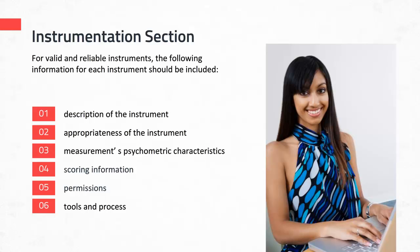This concludes this tutorial. You should now understand the different types of reliability and validity, as well as their definitions. And you should understand what goes into a narrative for valid and reliable instruments in your instrumentation section of your quantitative research proposal or plan.